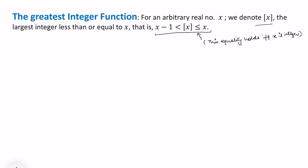Most of us are a little aware about greatest integer functions, so let's see a few examples. The greatest integer of root 2 is 1, because the value of root 2 is 1.4-something. For pi, which is 3.14, the greatest integer is 3. But for minus pi, the greatest integer is minus 4. By the definition, the greatest integer must be less than or equal to x, so for minus 3.14 the integer we allow is minus 4 — for negative numbers it is the most negative part.